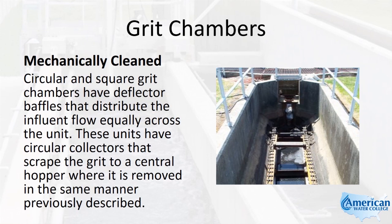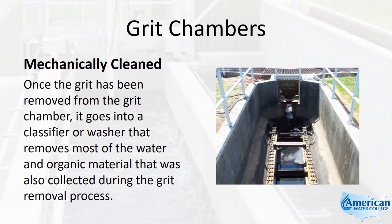Circular and square grit chambers have deflector baffles that distribute the influent flow equally across the unit. These units have circular collectors that scrape the grit to a central hopper where it is removed in the same manner previously described. Once the grit has been removed from the grit chamber, it goes into a classifier or washer that removes most of the water and organic material collected during the grit removal process.